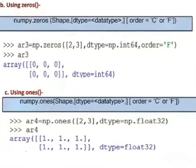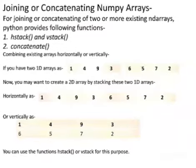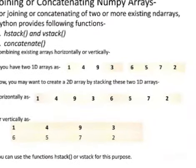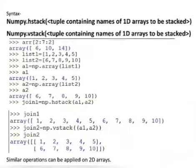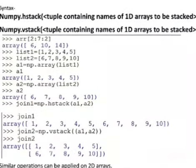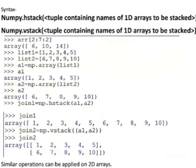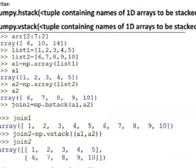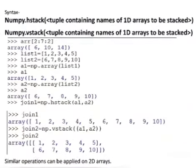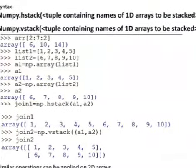We can see joining and concatenating NumPy arrays using hstack and vstack. By hstack we can combine two arrays horizontally, and by vstack we can combine them vertically. Arrays a1 and a2 have been combined using hstack — that is, horizontally — and also combined vertically along particular columns. We have already tried this in class 11th.